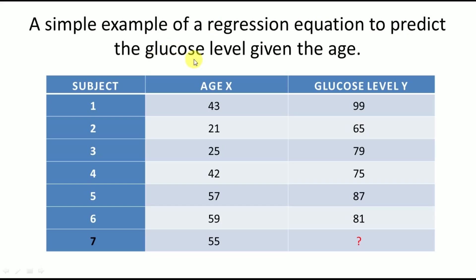Glucose level is the dependent variable and age is the independent variable. Using these first six examples, we need to create a linear regression equation, and using that equation, we can find the value of glucose level given the value of age. In this case, the age given to us is 55, and using 55 we need to calculate what the glucose level is.